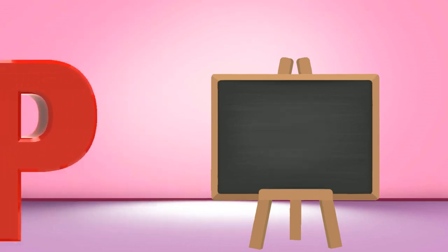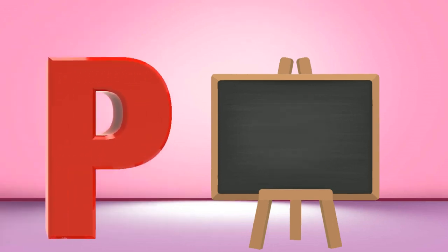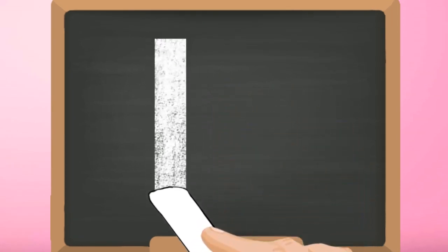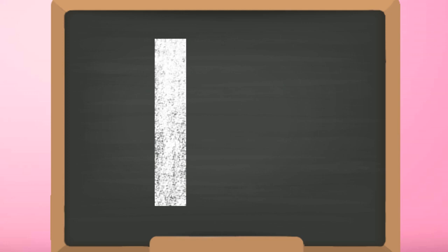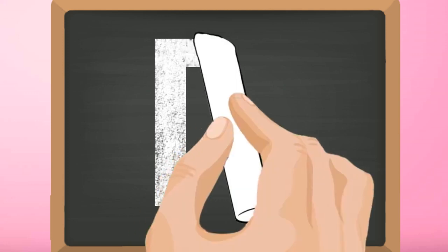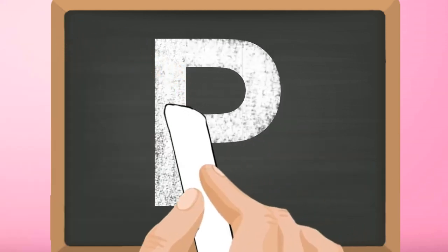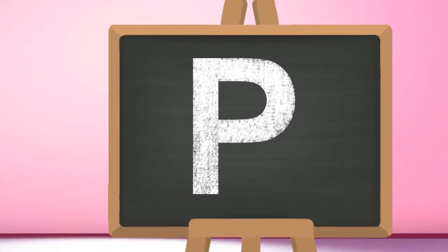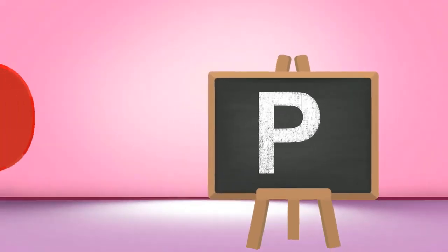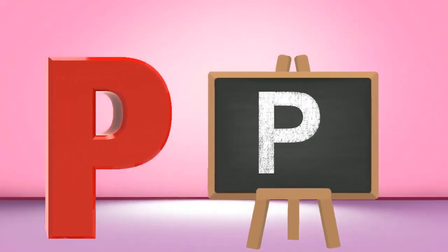Capital O. P, capital P. Start from the top and draw a standing line down. Go again to the top and draw a curve up to the middle. Capital P.